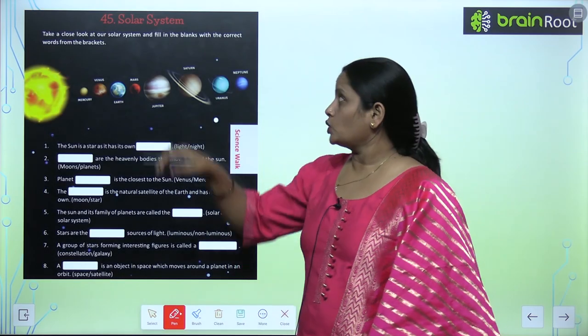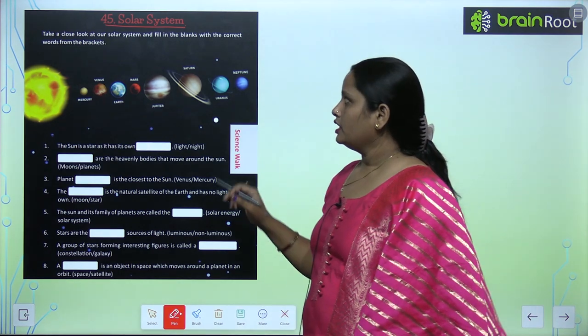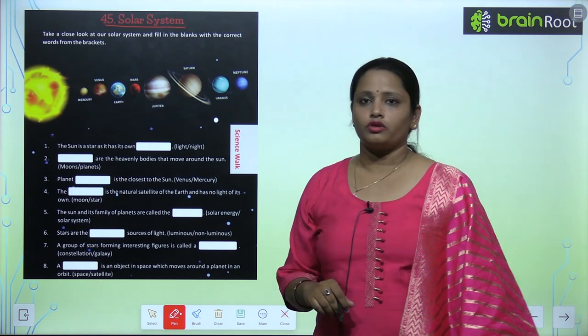Children, let's learn about our solar system in chapter number 45. Take a close look at our solar system and fill in the blanks with the correct words from the bracket.